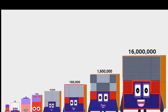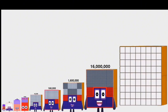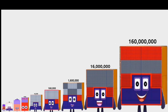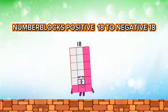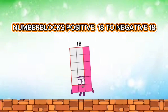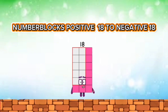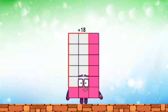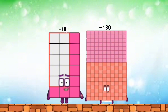Sixteen million. One hundred sixty million. Number blocks positive eighteen to negative eighteen. Positive eighteen. Positive one hundred eighty.